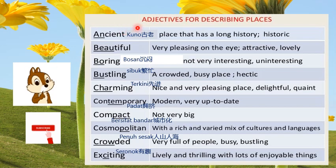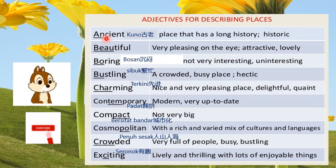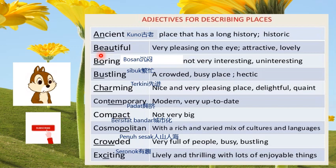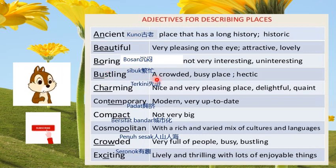Here are some words we can use to describe places. Ancient means a place that has a long history — historic. Beautiful means very pleasing on the eye, attractive, lovely. Boring means not very interesting, uninteresting. Bustling means a very crowded, busy place. Charming means a nice and very pleasing place.